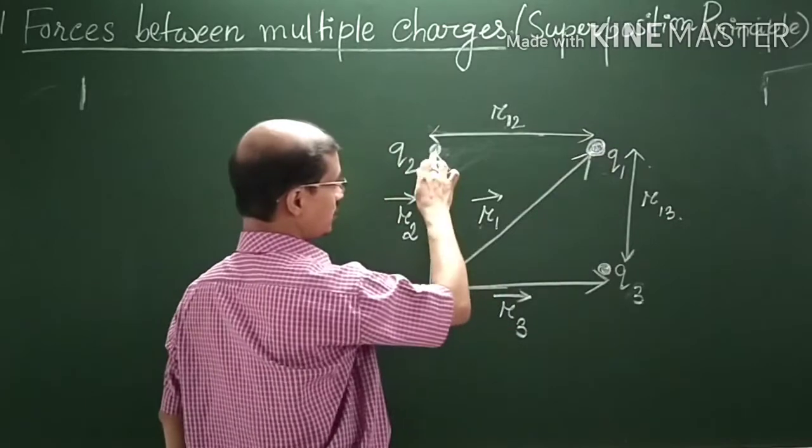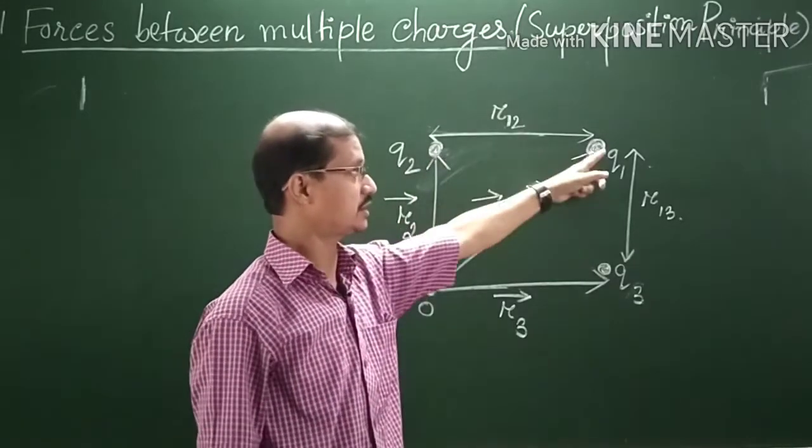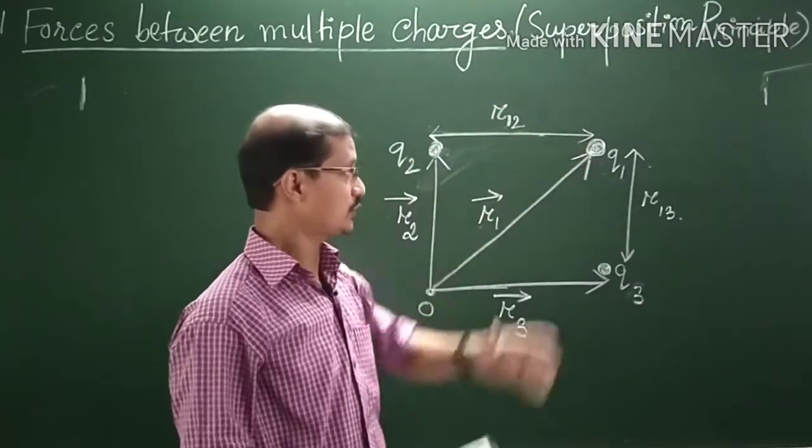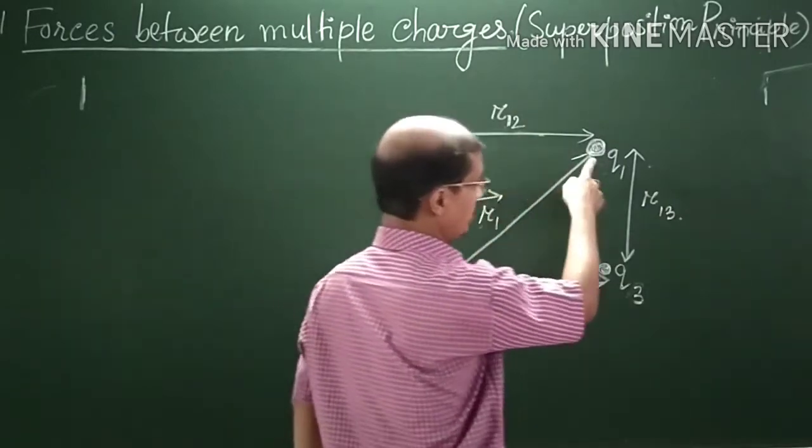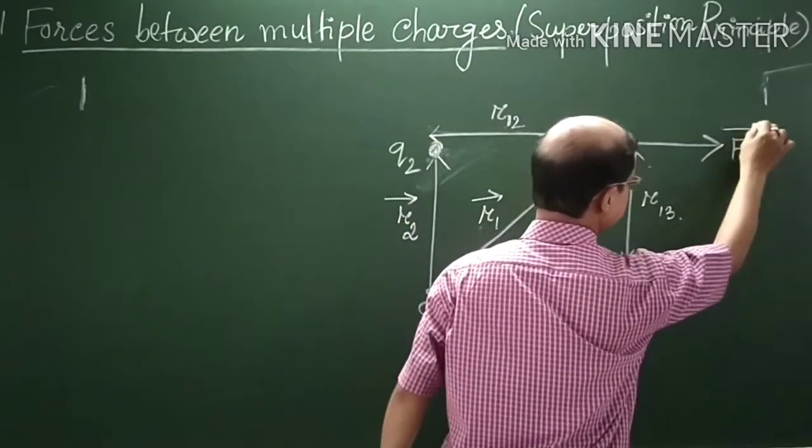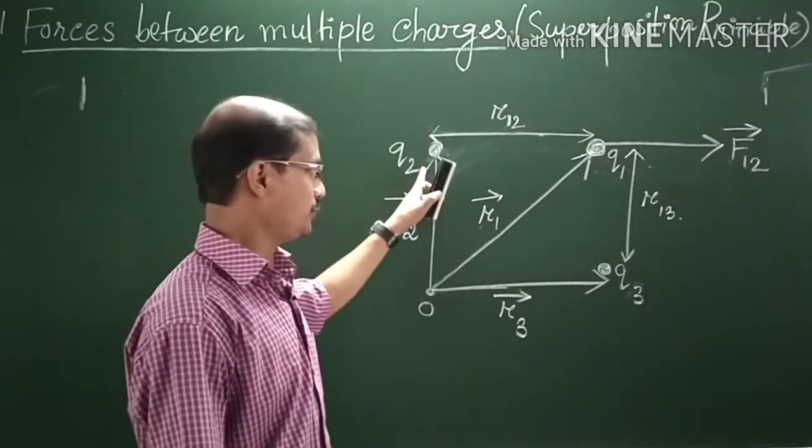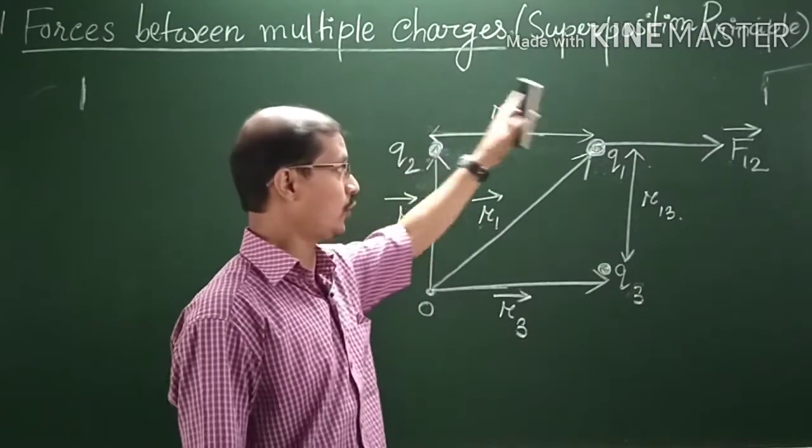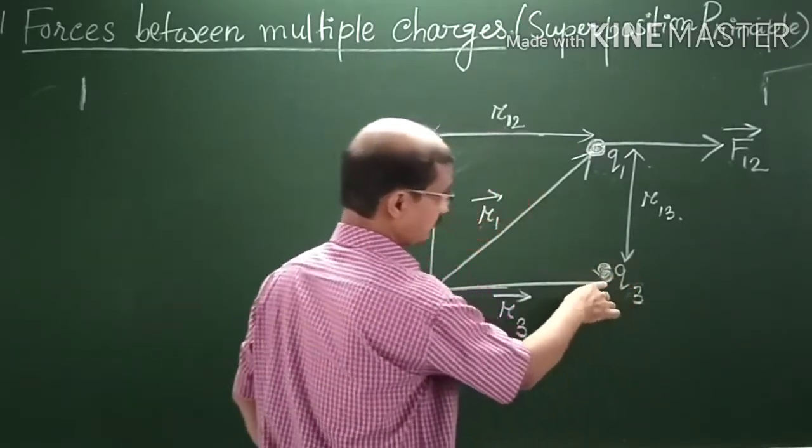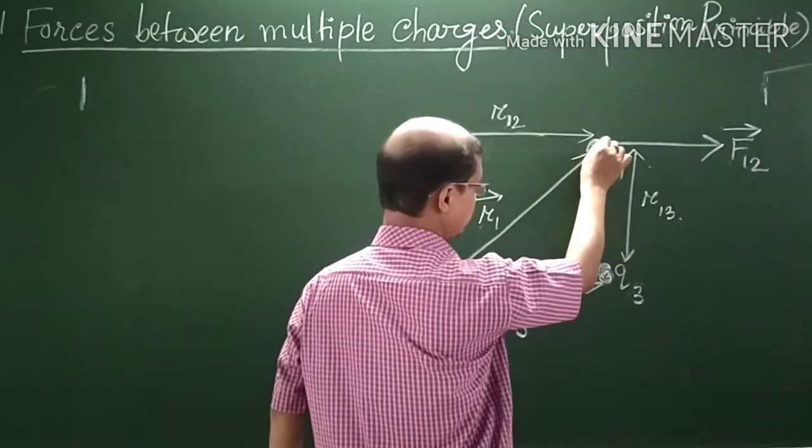The charge Q2 will repel the charge Q1 because Q2 and Q1 are like charges. This charge Q2 will repel Q1 in this direction. That force is F12. Similarly, this charge Q3 and Q1 are also like charges, so Q3 will repel the charge Q1 in this direction.